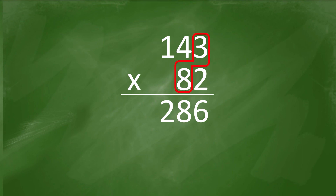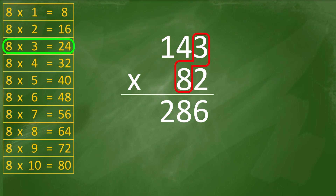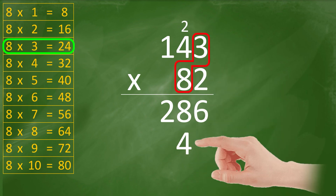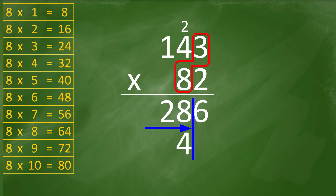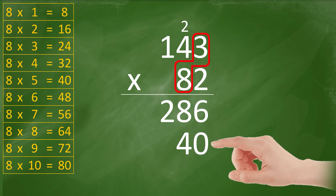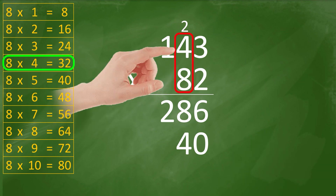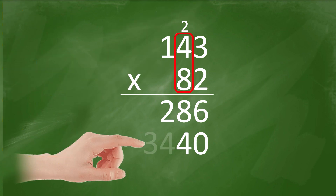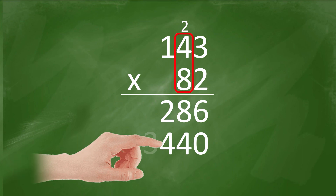8 times 3 — you can check your multiplication table if you haven't mastered it yet — equals 24; 4 stays, carry 2. Your answer must align here; do not start here, it should be here. Always put 0 to be safe. 8 times 4 equals 32, plus 2 equals 34 — 4 stays, carry 3.